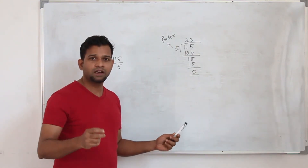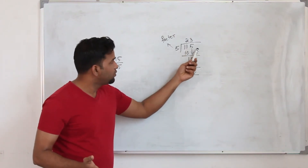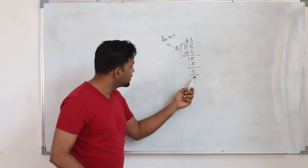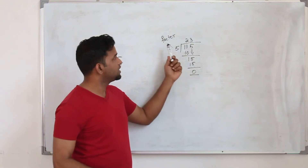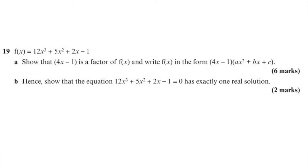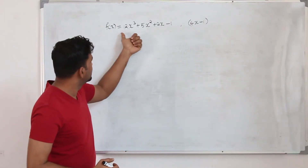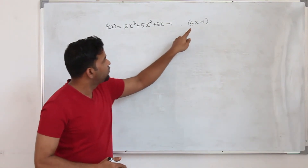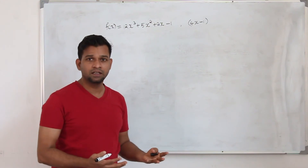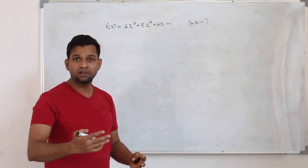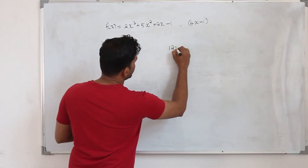When the question asks you to check whether a divisor is a factor of a polynomial, use the long division method and check whether you get remainder 0. If the remainder is 0, it's a factor; otherwise it's not. I have taken question 19 from exercise 1b: you are given f(x), show that 4x−1 is a factor of f(x), and write f(x) in the form (4x−1) times a quadratic expression.